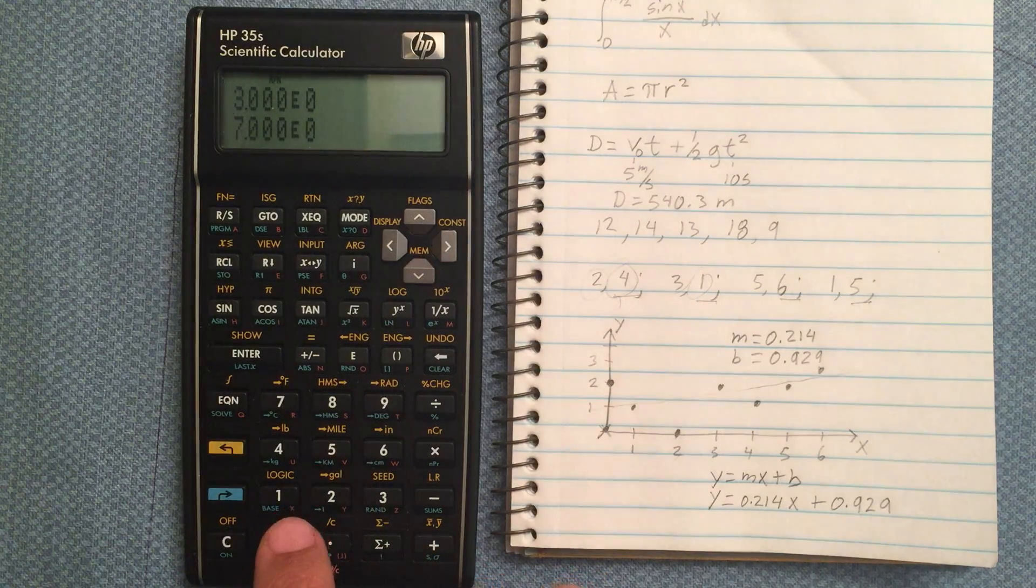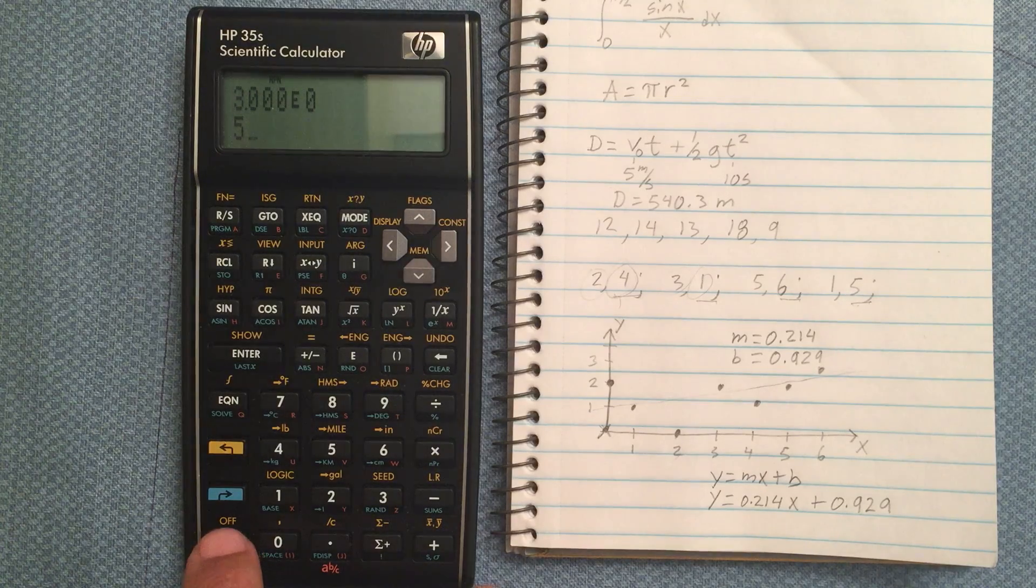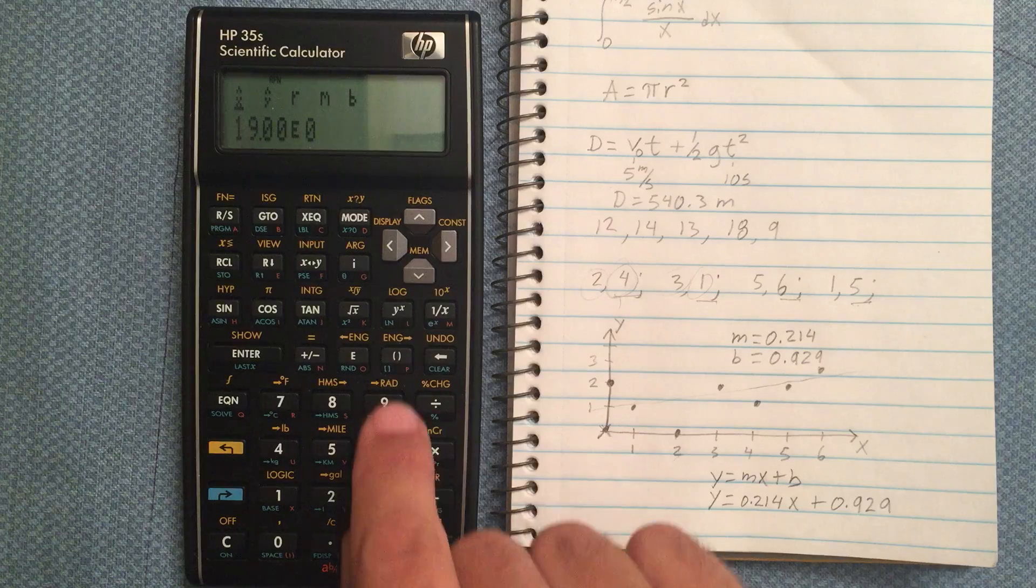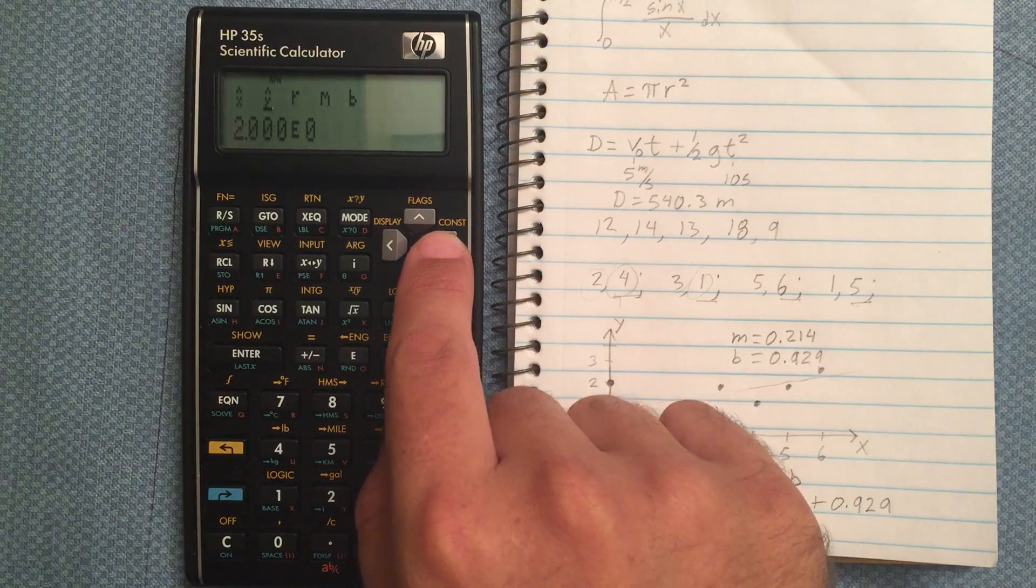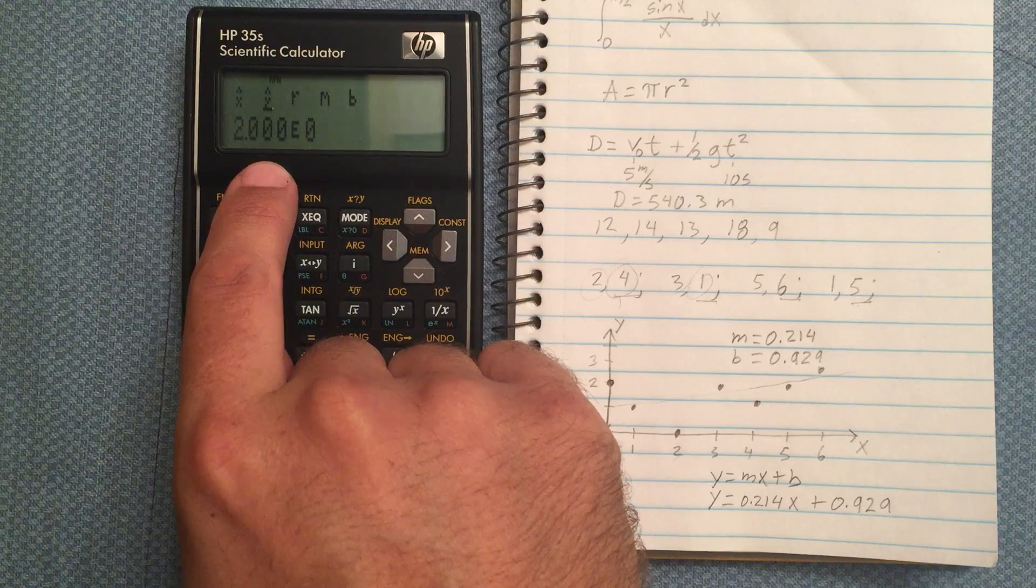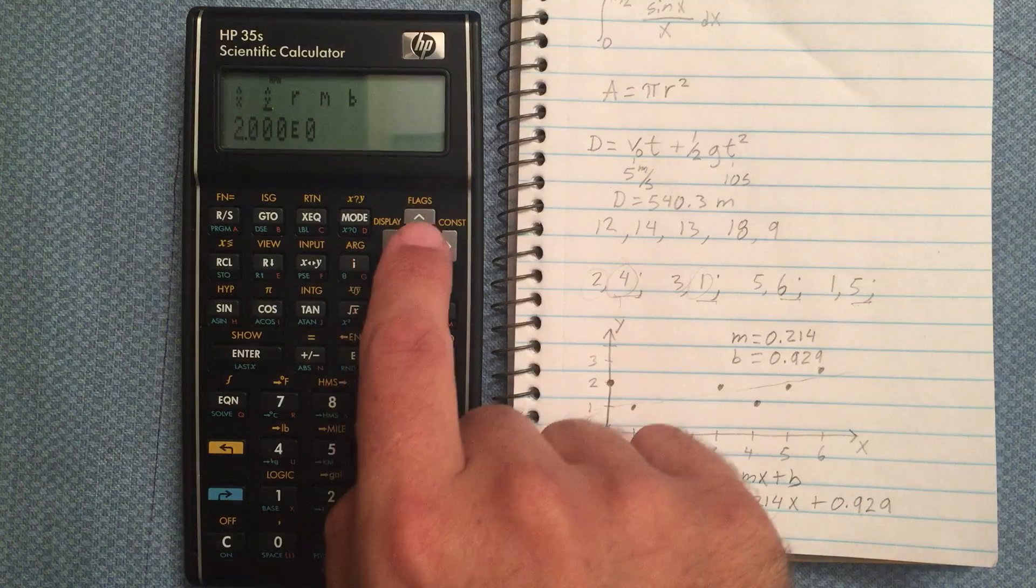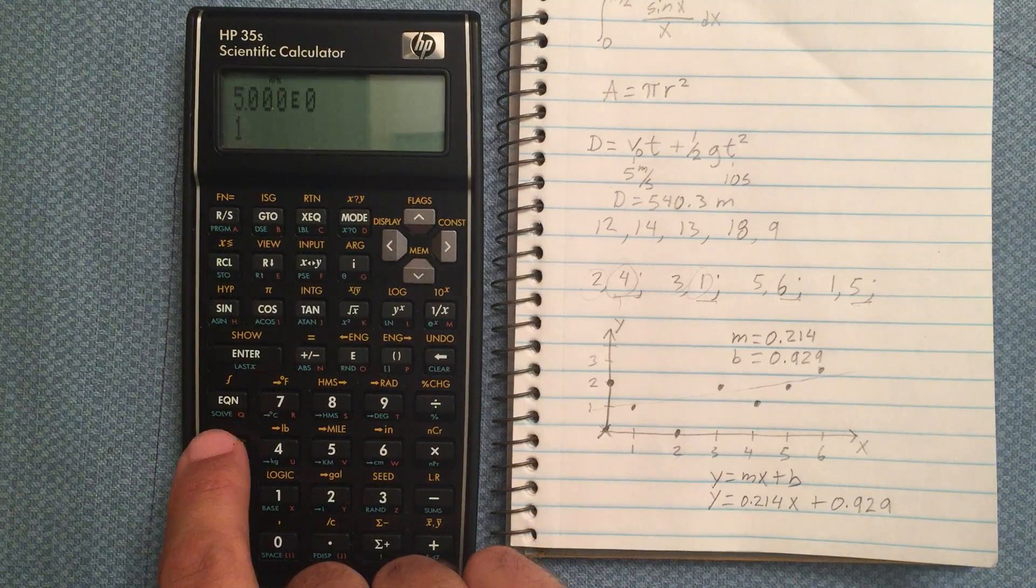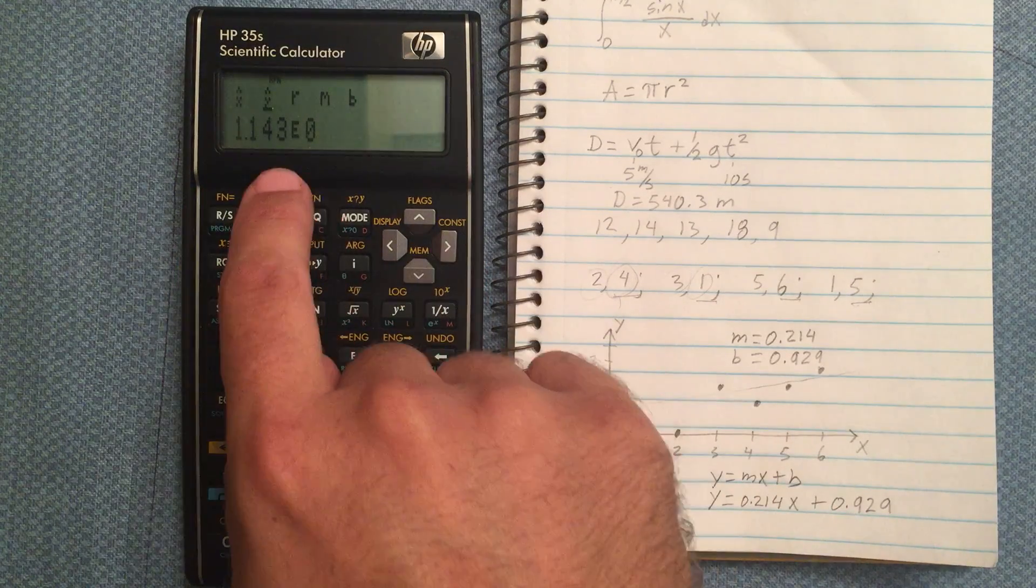So if I enter a number in here, let's say 5, and then go to my linear regression, it tells me that given an x value of 5, my y value should be 2. And given an x value of say 1, my y value is going to be 1.14.